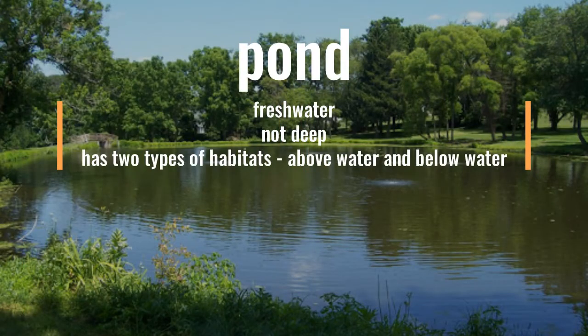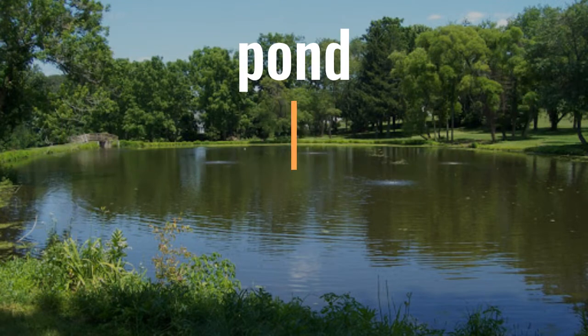A pond is made of fresh water. It's very shallow, not deep. And there's two types of habitats: above water and below.